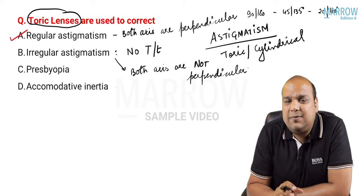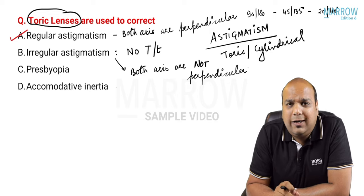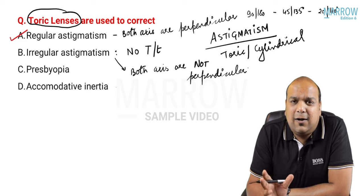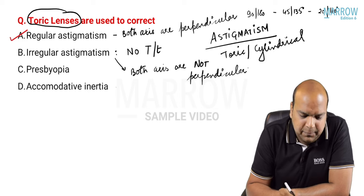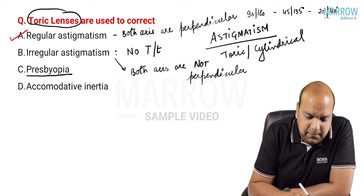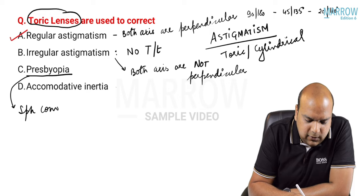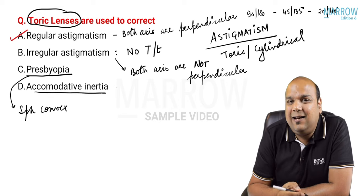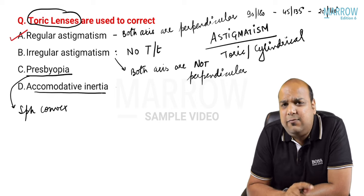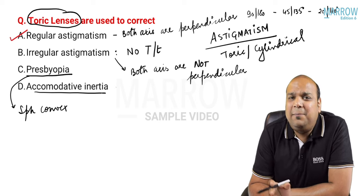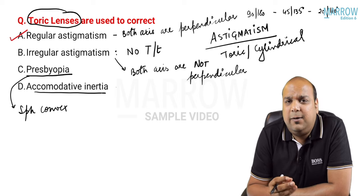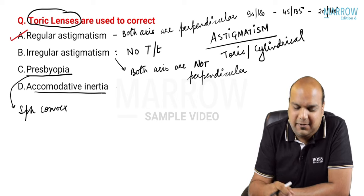Both intraocular lenses (IOLs) and contact lenses can be toric lenses. Treatment for presbyopia requires near glasses which are spherical convex. Accommodative inertia can occur in conditions like spasm of accommodation, where we use a mydriatic cycloplegic or other pharmacological treatment - it has nothing to do with lenticular or spherical glass treatment.